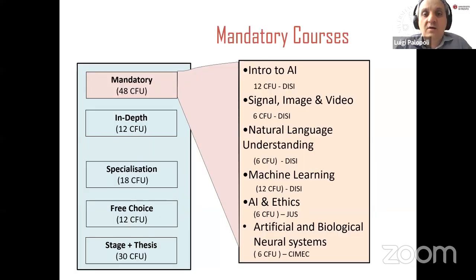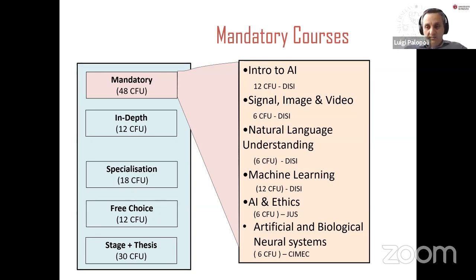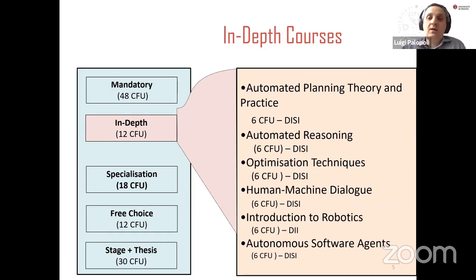Given this broad spectrum, we designed a course with an initial broad foundation of 48 mandatory credits. We introduce artificial intelligence, give the basics of signal, image and video processing, natural language understanding, machine learning, AI and ethics, and artificial and biological neural systems. Once this foundation is laid, students choose 12 credits from an in-depth group including automated planning, automated reasoning, optimization techniques, human-machine dialogue, introduction to robotics, and autonomous software agents.